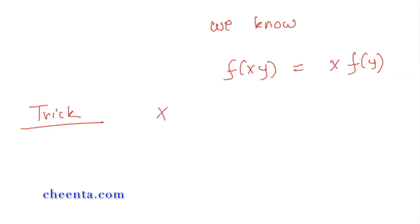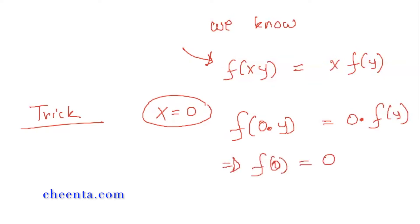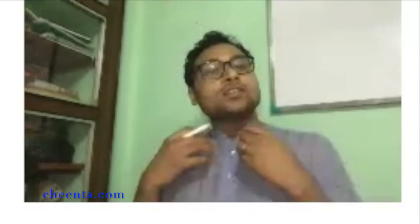To find the value at zero, just set x = 0. Remember, this equation is true for all real numbers x and y, so I can definitely put x = 0. Doing that, I get f(0 · y) = 0 · f(y), which is basically saying that f(0) = 0. So at input value zero, the output of the function is zero. This is important information, but it will not be very relevant for our purpose in this problem.